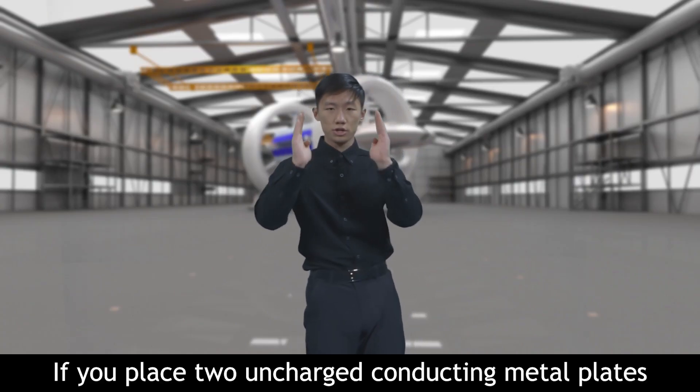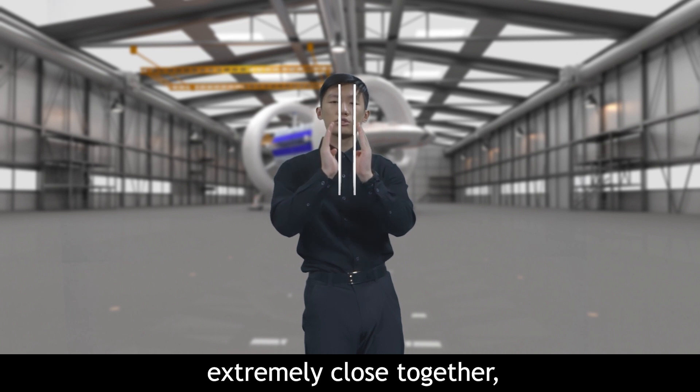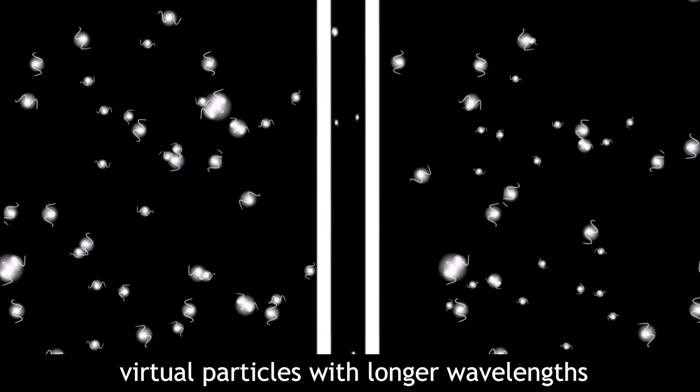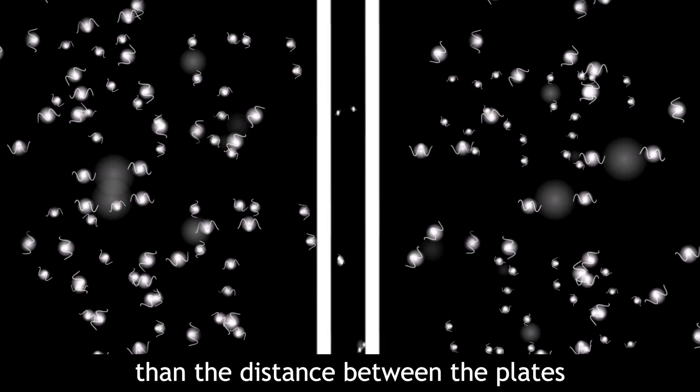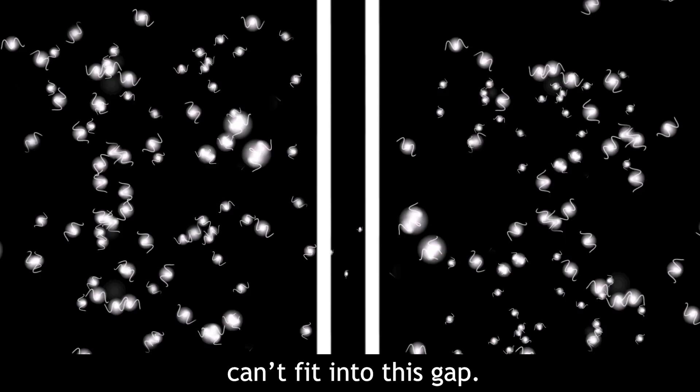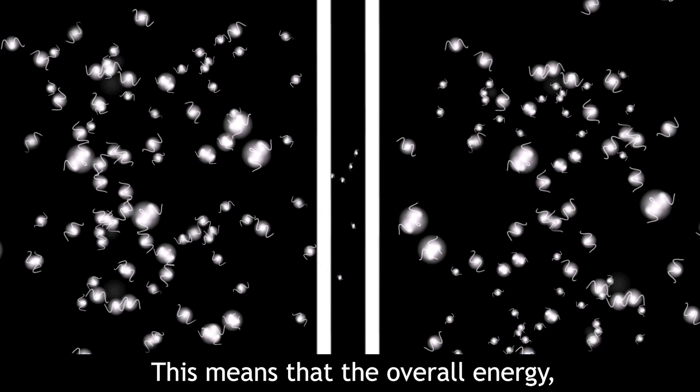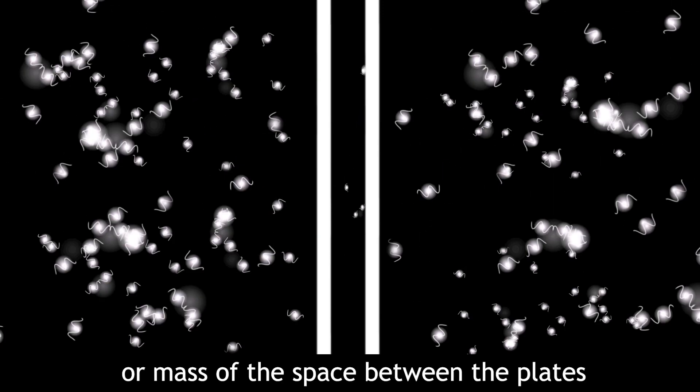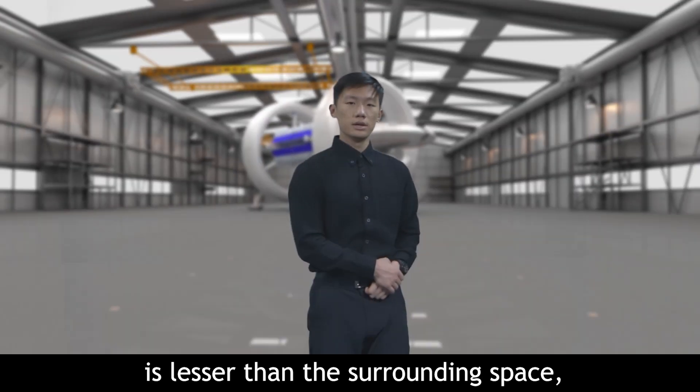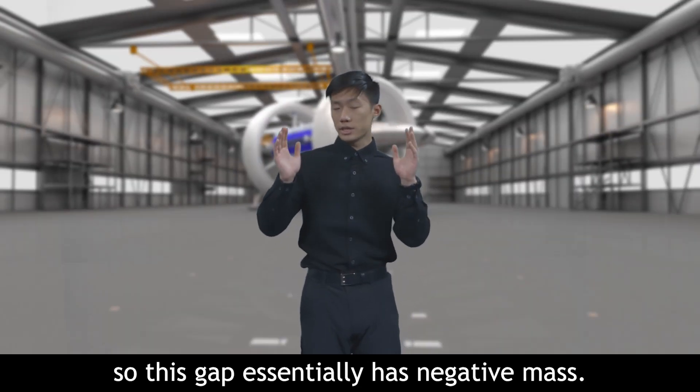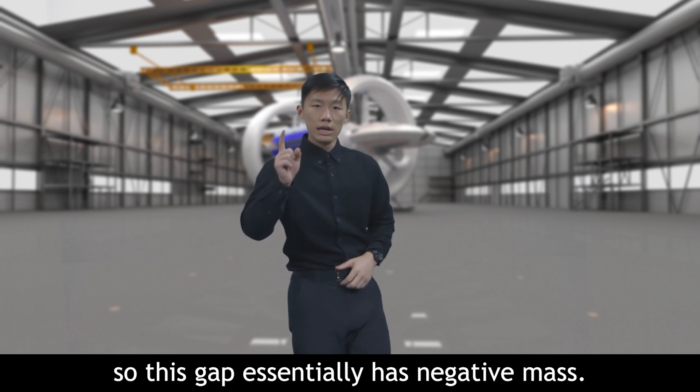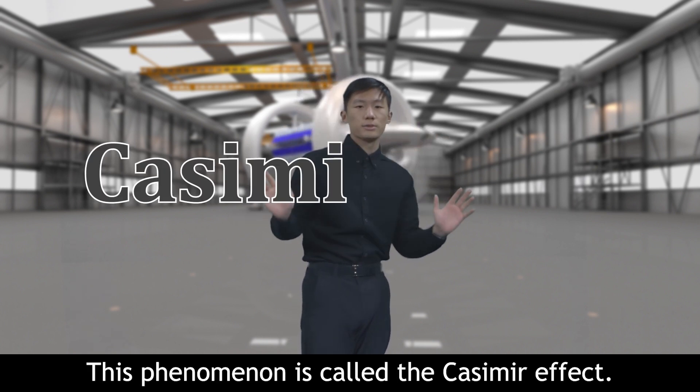If we simply place two uncharged conducting metal plates extremely close together, virtual particles with wavelengths longer than the distance between the two plates can't fit into this gap. This means that the overall energy or mass of the space between the plates is lesser than the surrounding space. So, this gap essentially has negative mass. This phenomenon is called the Casimir effect.